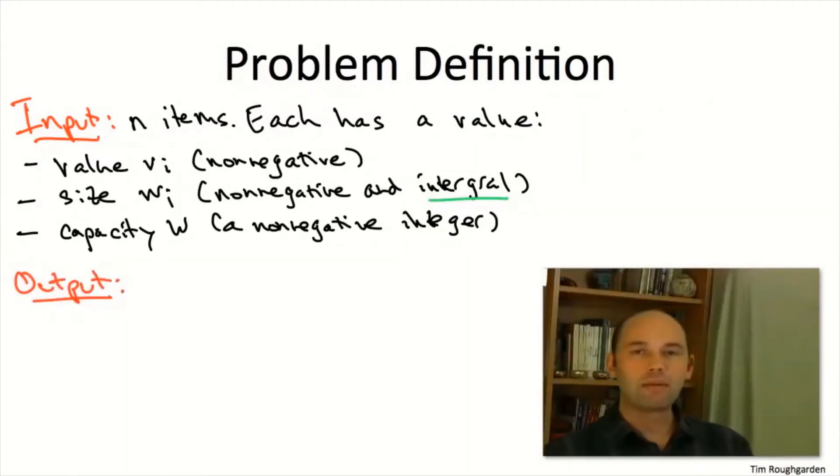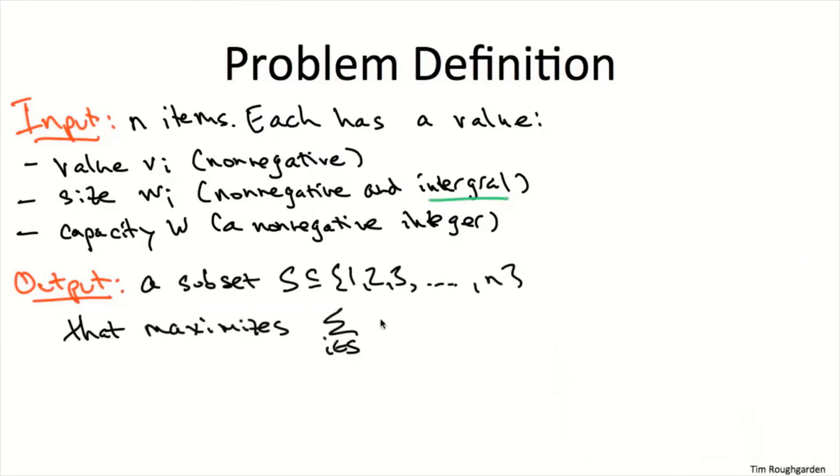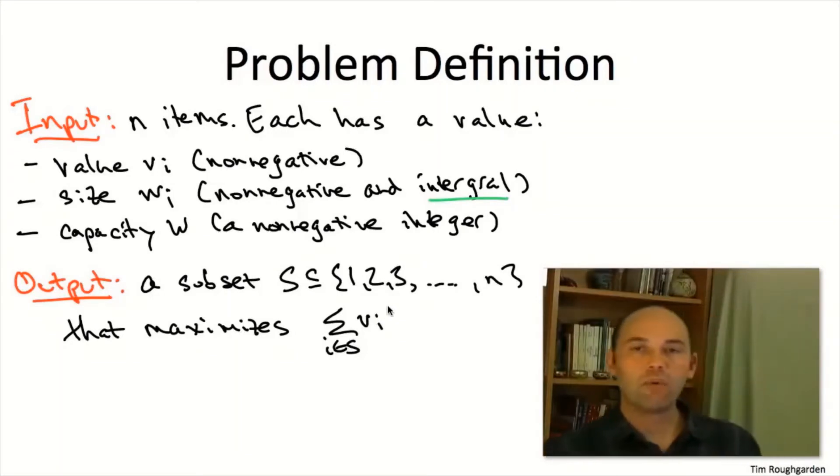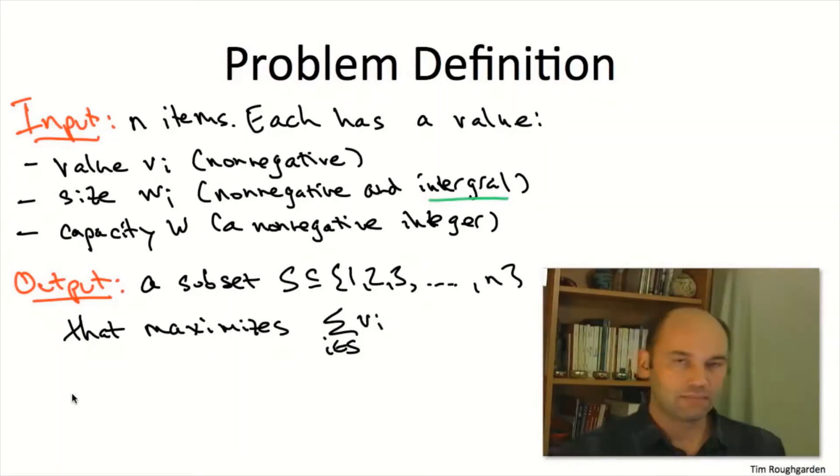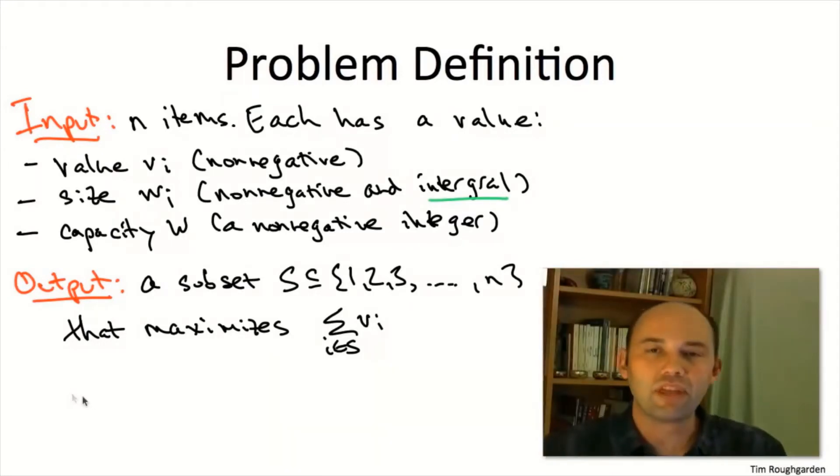The knapsack problem's responsibility is to select a subset of the items. What do we want? We want as much value as possible. So we want to maximize the sum of the values of the items that we select. What prevents us from picking everything? Well, the sum of the sizes of the items that we pick have to total to at most the capacity W.